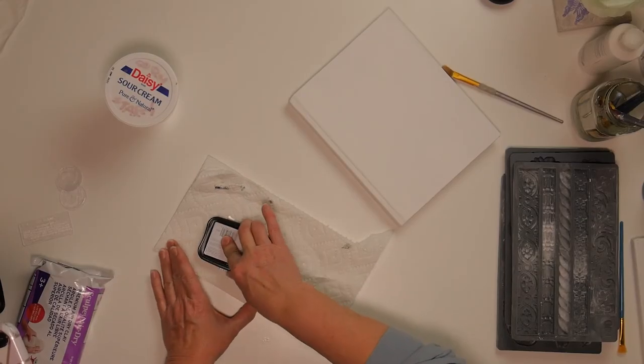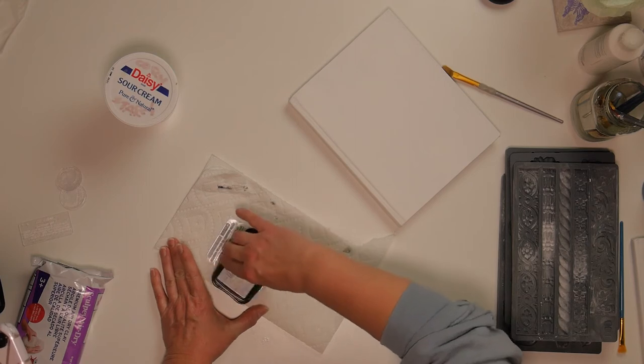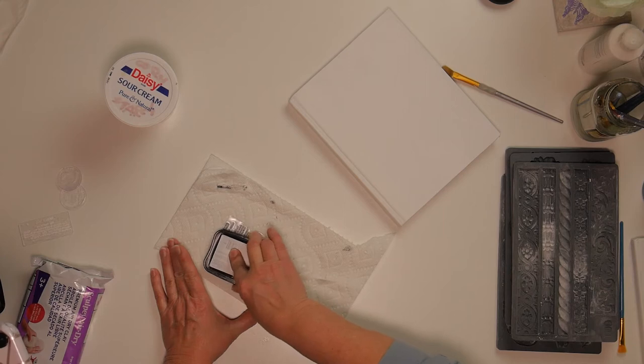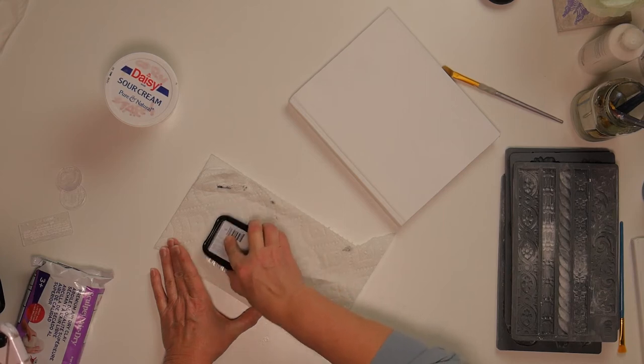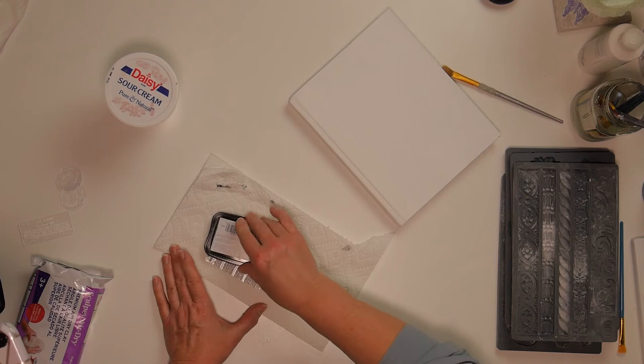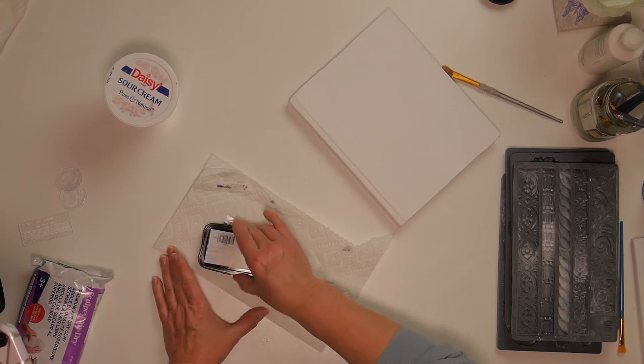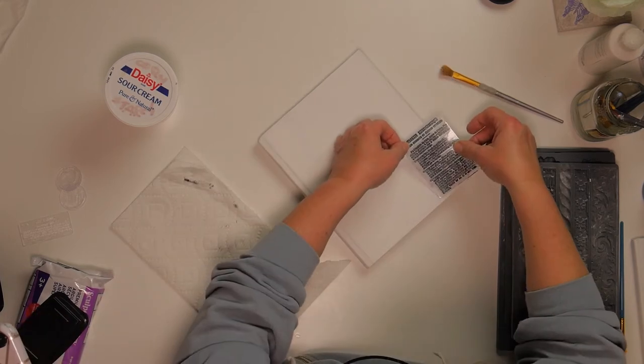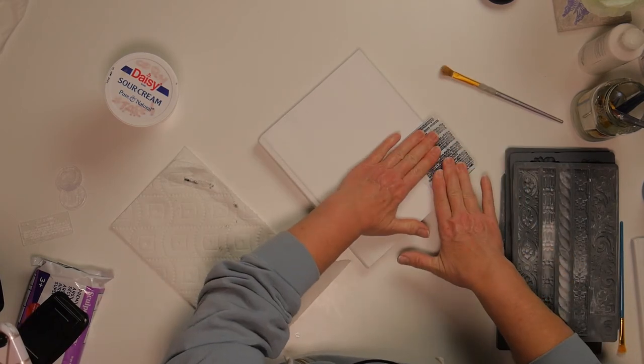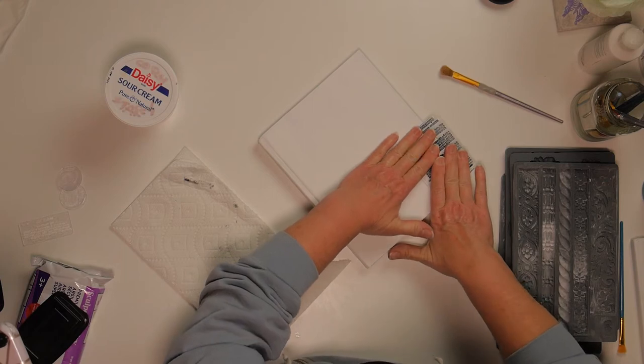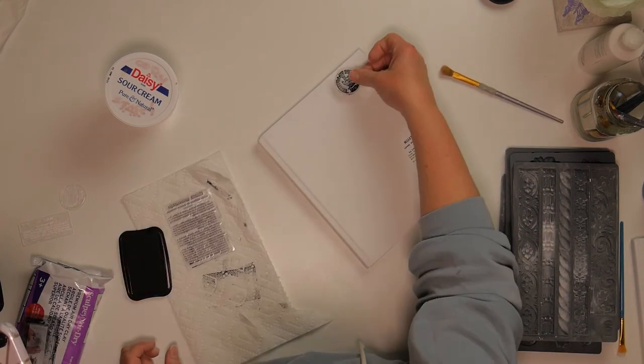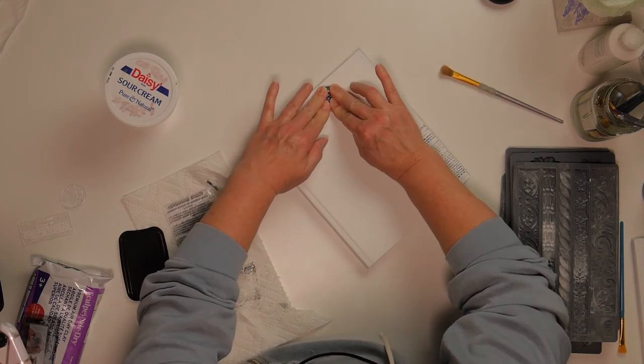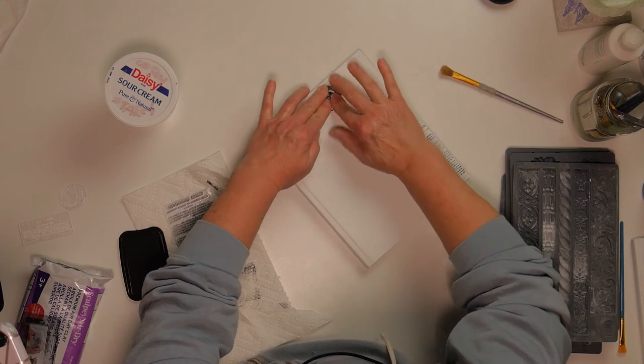So here I am using the IOD decor stamp called Le Courier. There's a whole packet of different types of French typed type sets. I'm just going to ink this up and put a portion of it on the book. And then this one is another stamp from the same IOD decor stamp for Le Courier.